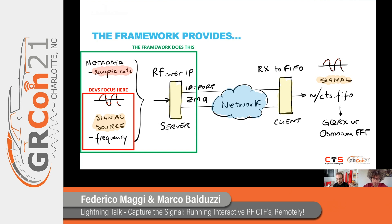If you're a challenge developer and you want contestants to solve your challenge, you just focus on developing a GRC flow graph as you would normally do. The framework will take care of tunneling, dividing the spectrum into slices, mapping them to a port range, and so on. On the contestant side, the tool also provides support so they can receive signals as they would on-site with a real transmitter.